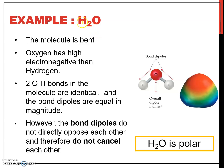The next example is H₂O. After drawing the Lewis structure, you determine the molecular geometry using VSEPR theory. The geometry is bent. Since oxygen has high electronegativity compared to hydrogen, the arrow of the dipole points towards oxygen. The electrons are attracted towards oxygen compared to hydrogen.